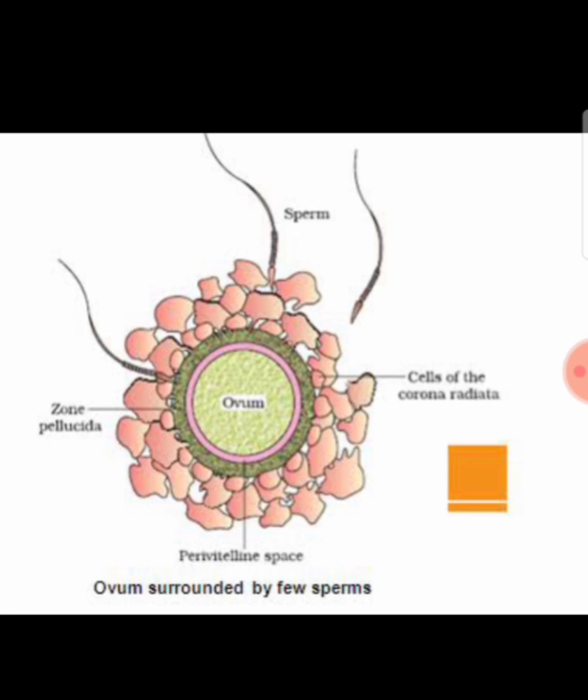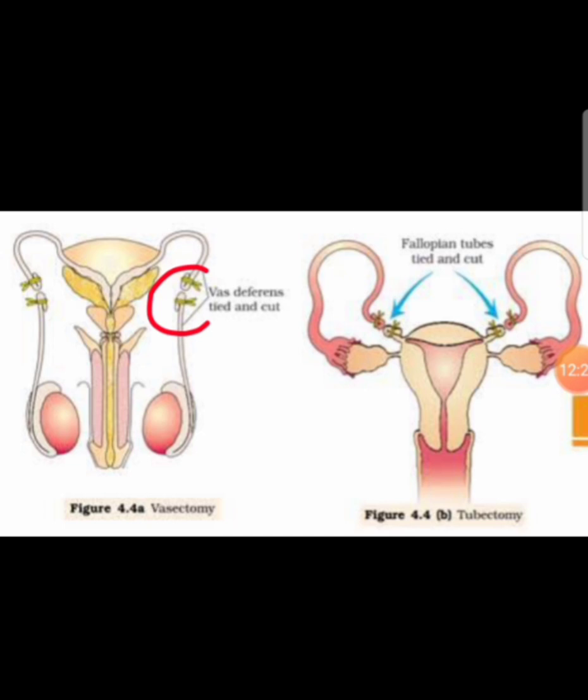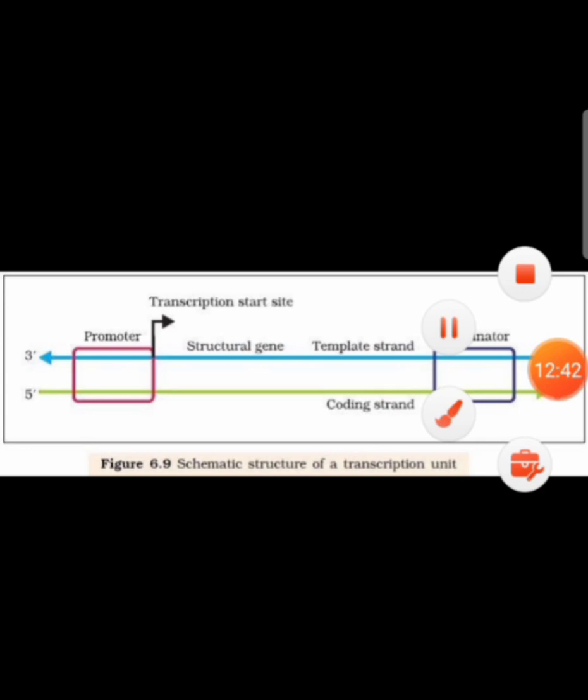In this diagram you can find vasectomy, where the vas deferens is cut and tied, and tubectomy, where the fallopian tubes (oviducts) are cut and tied. These are permanent sterilization methods — vasectomy in males and tubectomy in females.